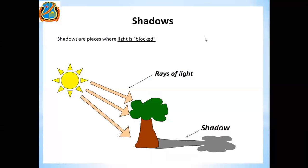Now we will see how shadows are formed. Shadows are places where light is blocked. You can see this is the sun — all of you know — a source of light. And here is a tree. The light rays are falling on it and the tree is blocking the light, so its shadow is formed.